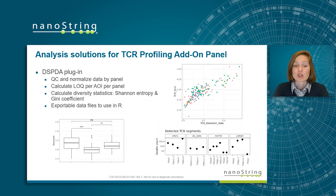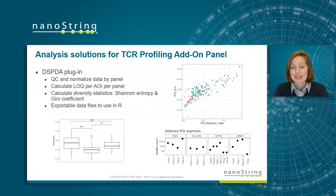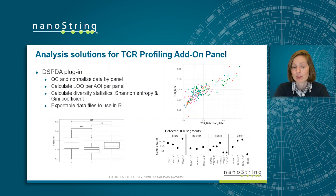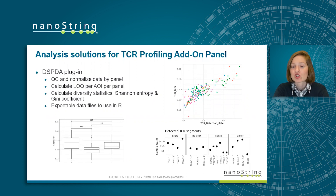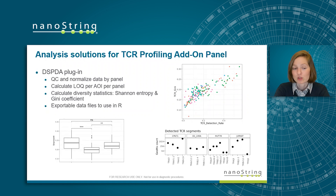To facilitate analysis of your GeoMix TCR profiling atom panel data, we have developed a DSPDA plugin analysis solution. The DSPDA plugin can be installed in the GeoMix DSP software and will enable you to QC and normalize your data by panel — that is, by the TCR panel or by the WTA or CTA panel separately. You can calculate LOQ, or limit of quantification, by AOI per panel, helping you set thresholds for gene detection and giving you confidence in your count data. You will also be able to calculate diversity statistics relevant to TCR profiling such as Shannon entropy and Gini coefficient, and all of this can be turned into exportable data files so you can work in R or another program of your choice.